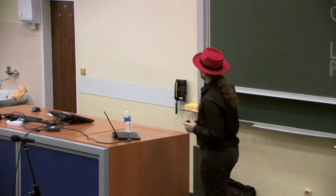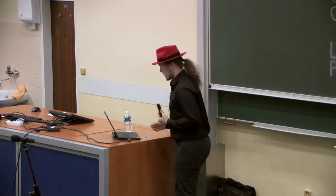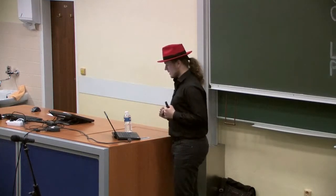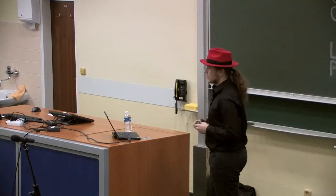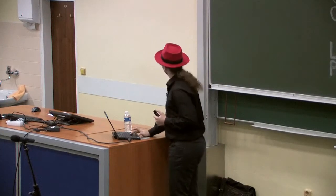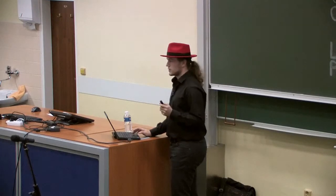The SCAP Security Guide also has content for JBoss Enterprise Application Server 5. The next project is community content which uses scripts instead of OVAL, so it's quick to get started with and is growing really quickly because you don't need to write any OVAL. In the last few weeks we started developing PCI-DSS content - PCI-DSS is proprietary guidance for the card industry - and we are working towards having this in SCAP format.